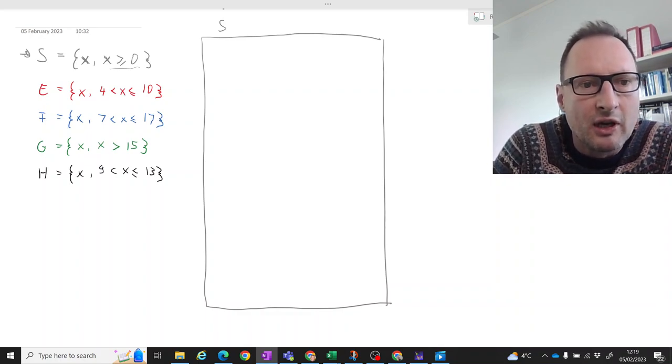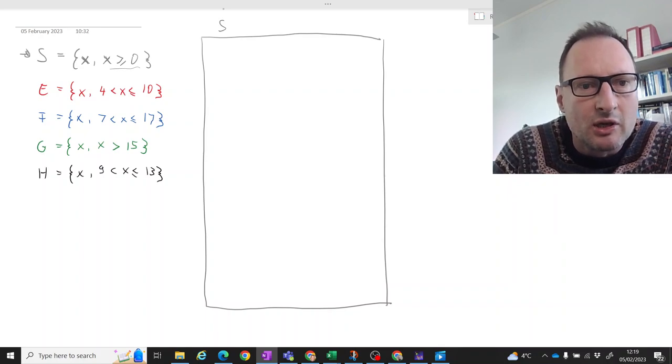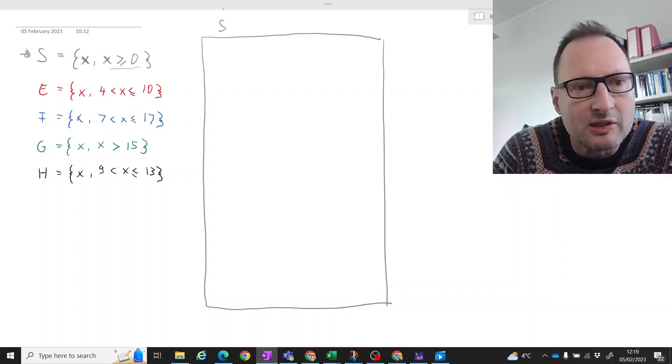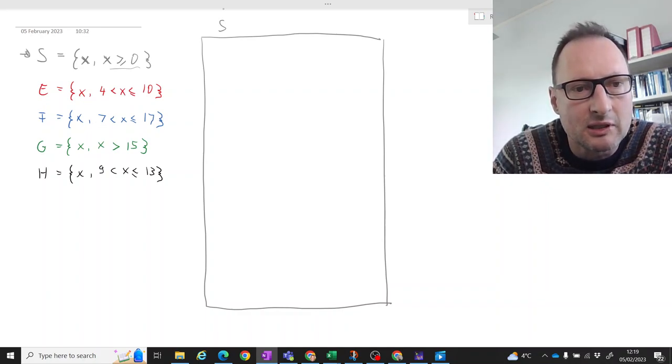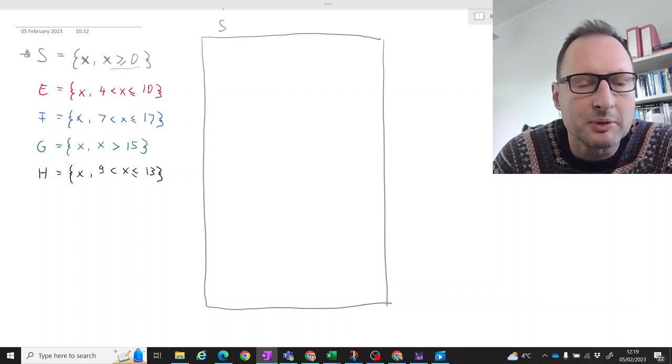And here we have four events which are defined on that sample space. So here, for instance, that first one means event E is the event that x takes a value between 4 or larger than 4 and smaller or equal to 10. So anything between 4 and 10, but not including 4. F is defined in a similar matter, that F is the event that x takes a value between 7 and 17, but not including 7.